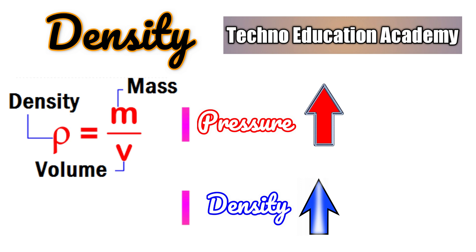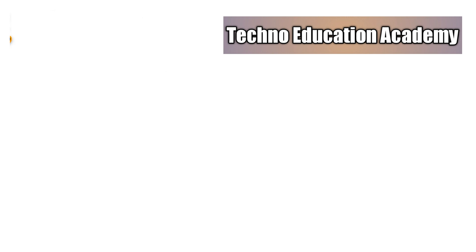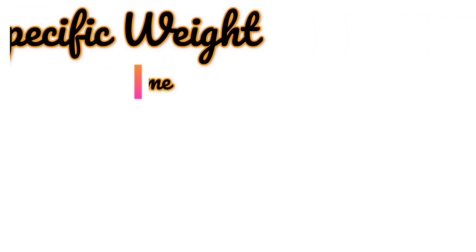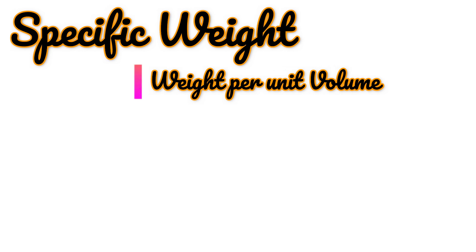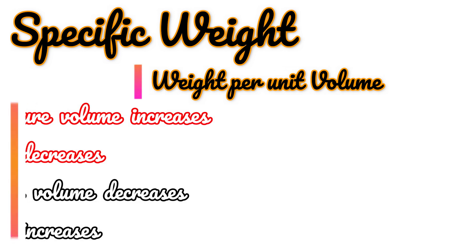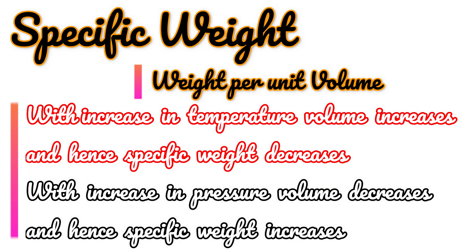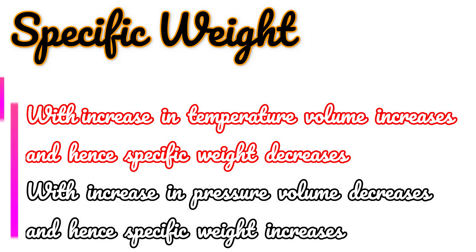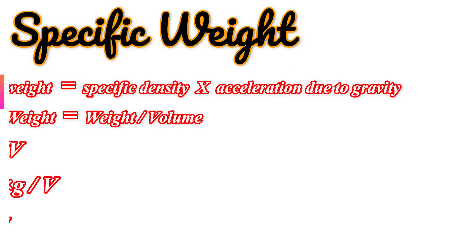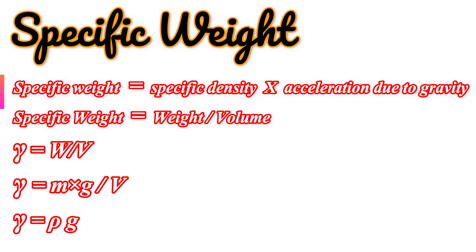The second property is specific weight. Specific weight, or weight density, of a fluid is the weight per unit volume. With increase in temperature, volume increases and hence specific weight decreases. With increase in pressure, volume decreases and hence specific weight increases. Therefore, specific weight equals density multiplied by acceleration due to gravity.